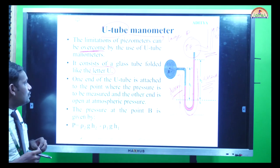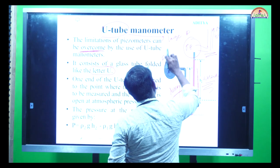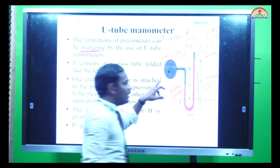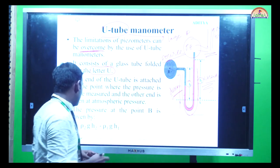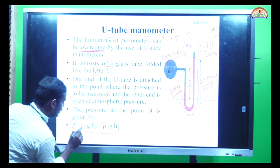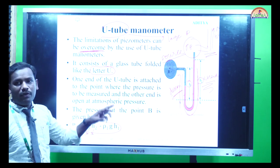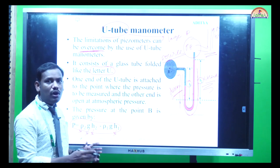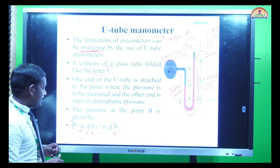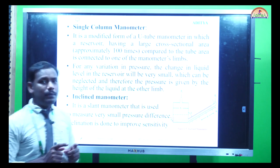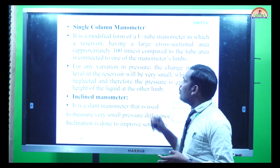The manometer is named U-tube because it looks like the English alphabet U. To one end you attach the source — wherever you want to measure the pressure — and at the other end you measure the height of the column. The equation uses rho for density, G for acceleration due to gravity, H1 for height in column one, and H2 for height in column two. Substituting all values in the equation gives the pressure P.